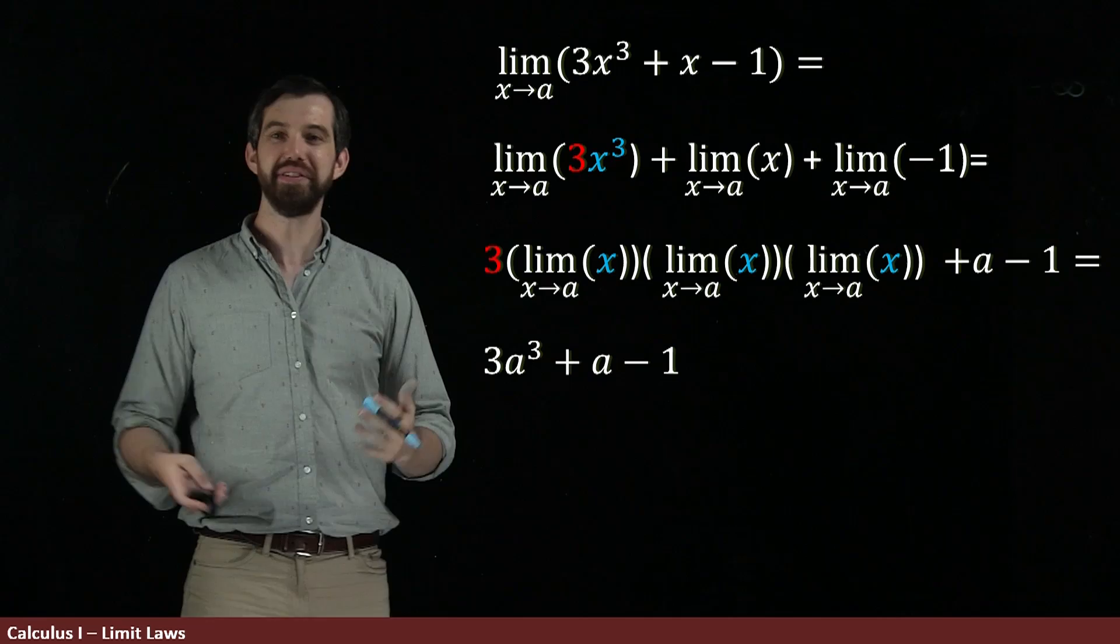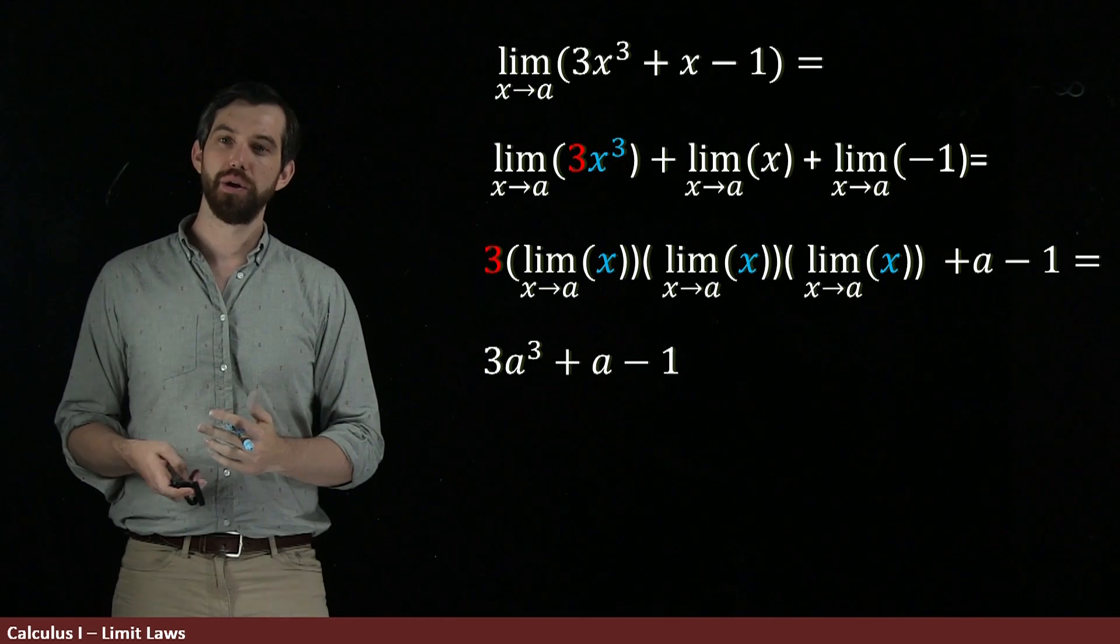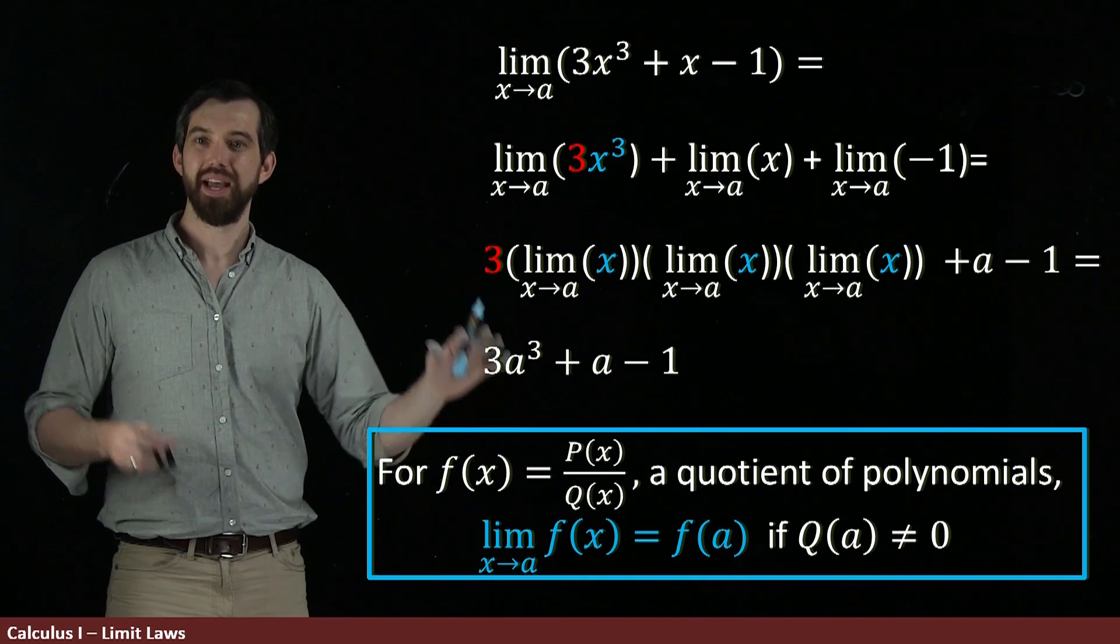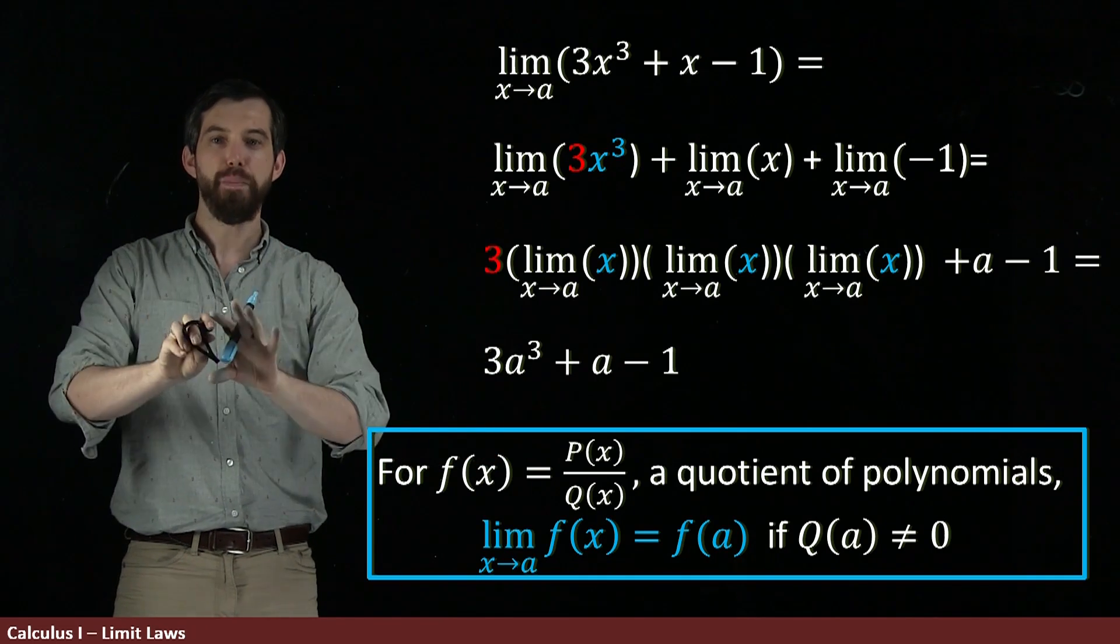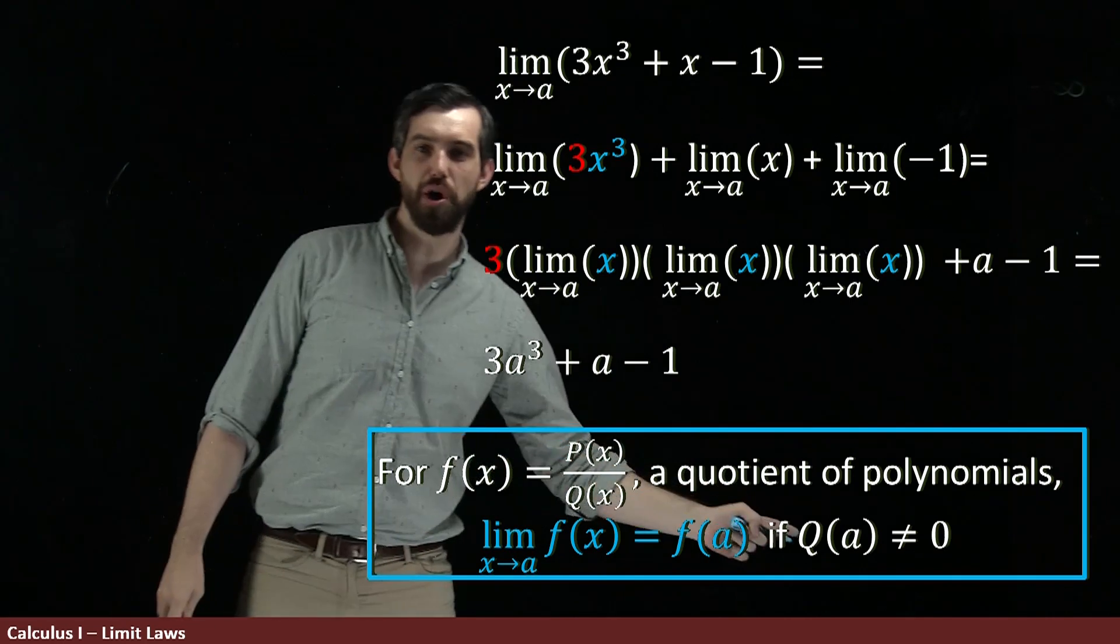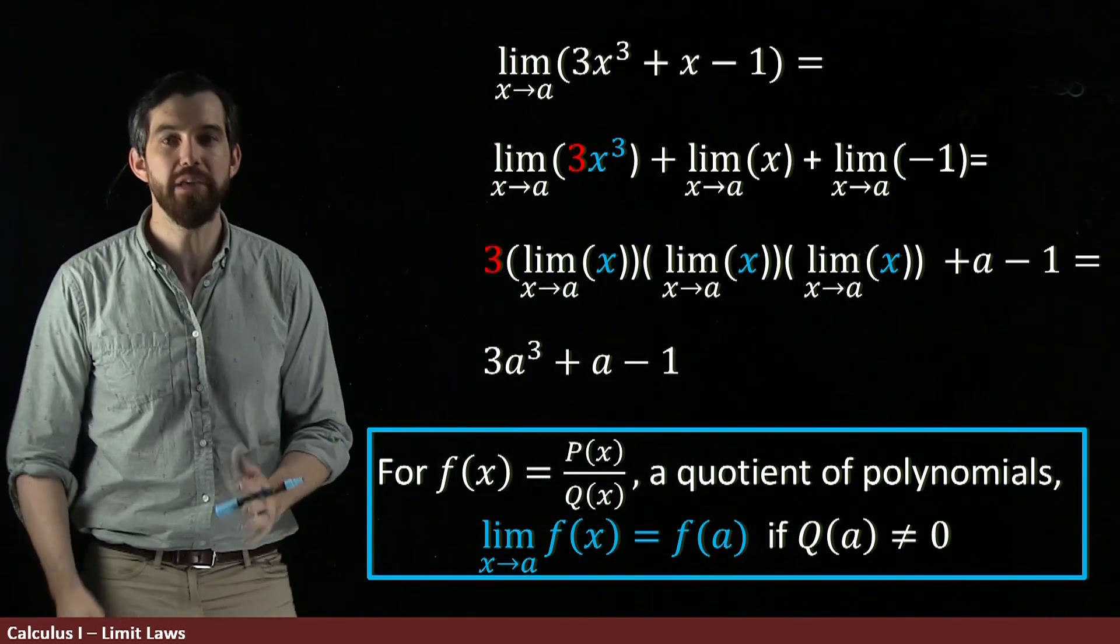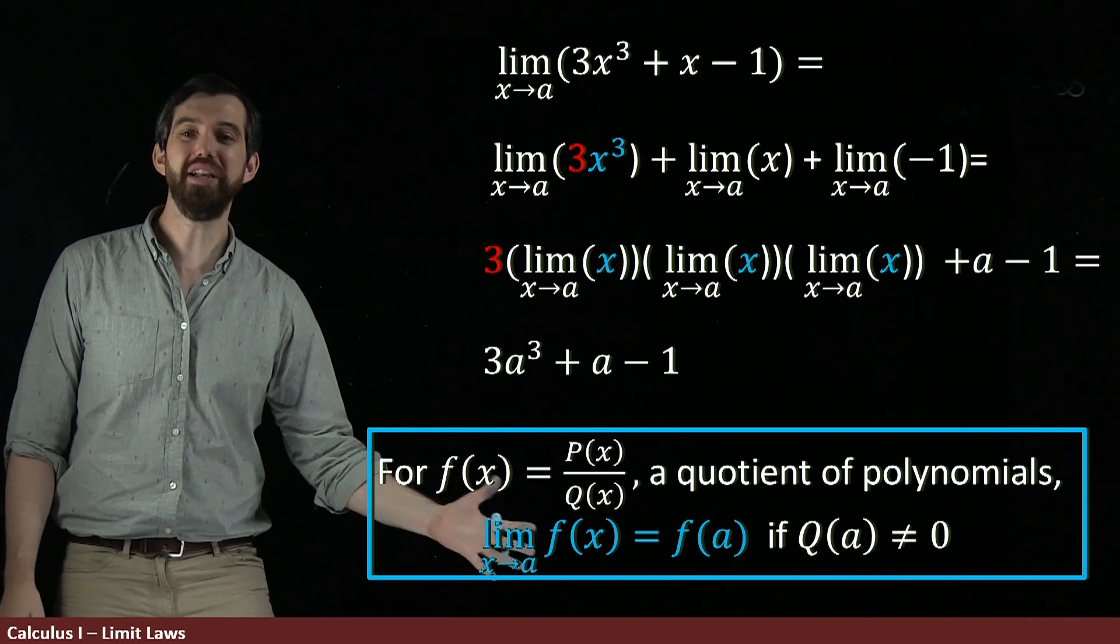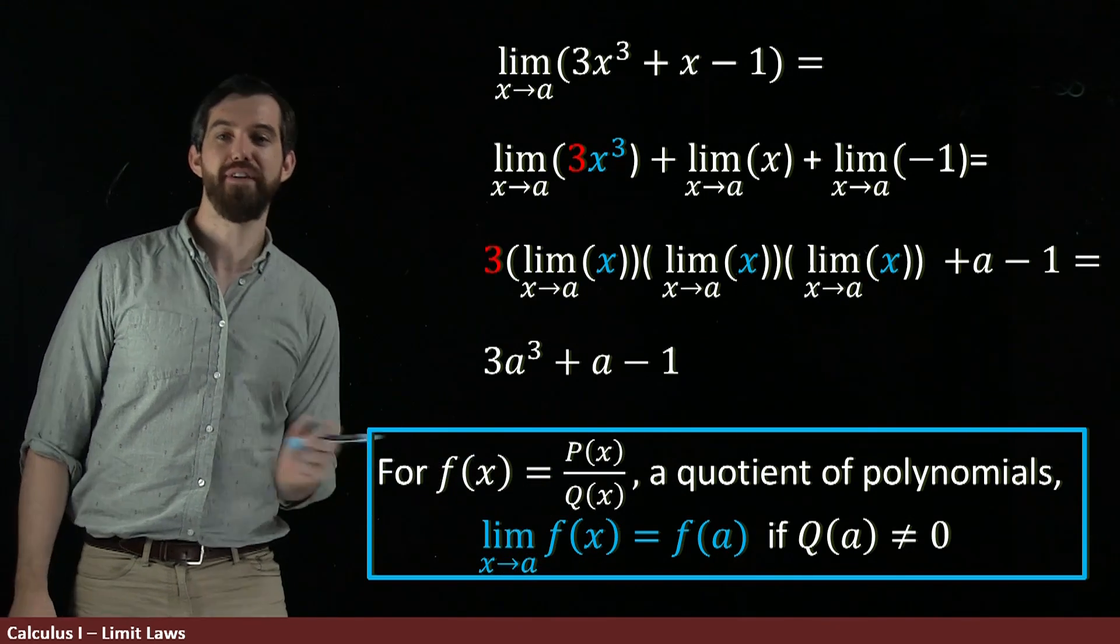And indeed, it's true even slightly more general. It's true for something called a rational function. So, this is the rational function f of x. It's a polynomial on the top and a polynomial on the bottom. And as long as you don't have the polynomial at this point, a being equal to 0, because you'd have some sort of division by 0 thing, the limit is super easy. You just plug the value in.